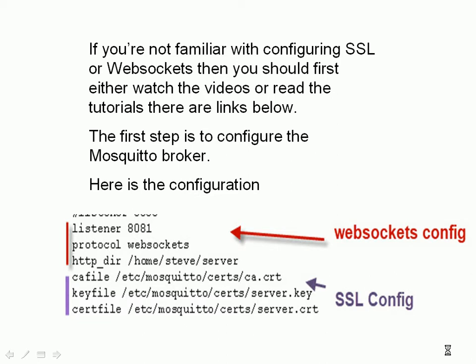The first step is to configure the Mosquitto broker. Here's the configuration — a very simple configuration. I'm going to use port 8081 for the port, and this port is going to be using WebSockets and SSL together. The protocol is WebSockets and I'm setting an HTTP directory. This is optional and I use it for quick testing. I've placed a file in that server directory — a very simple HTML file.